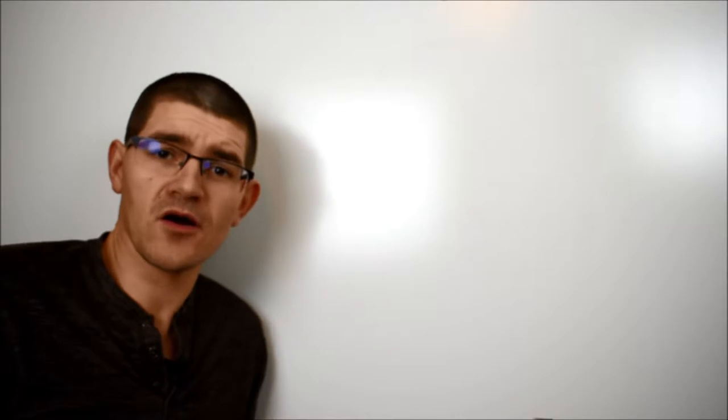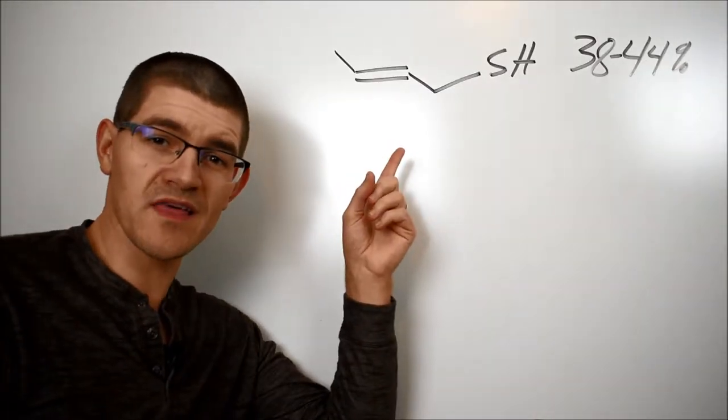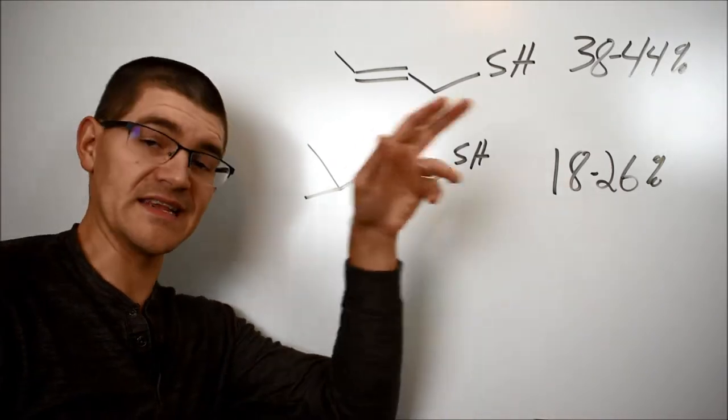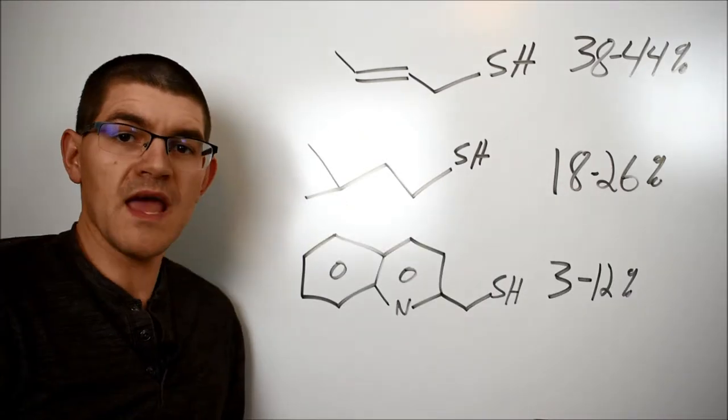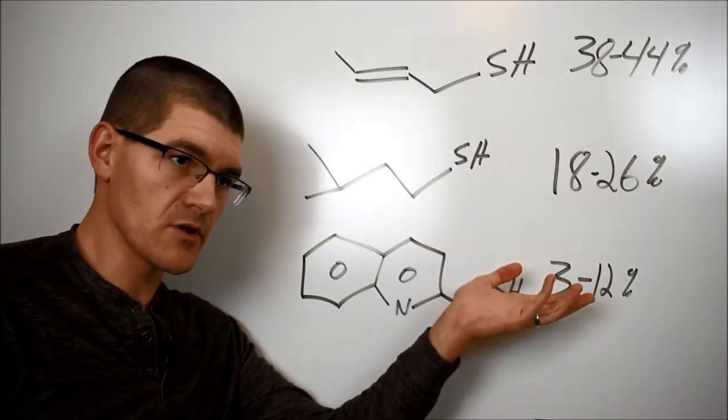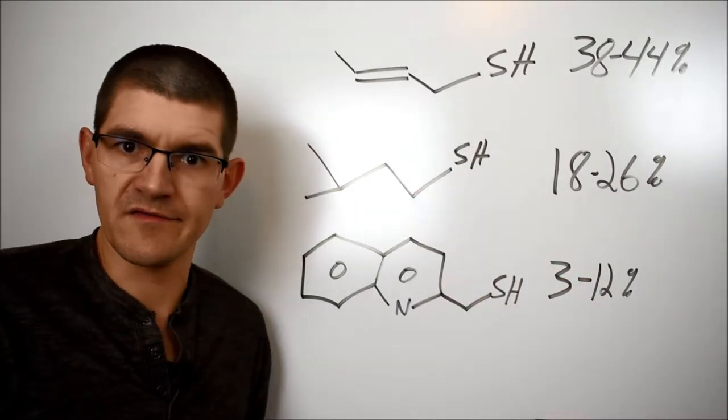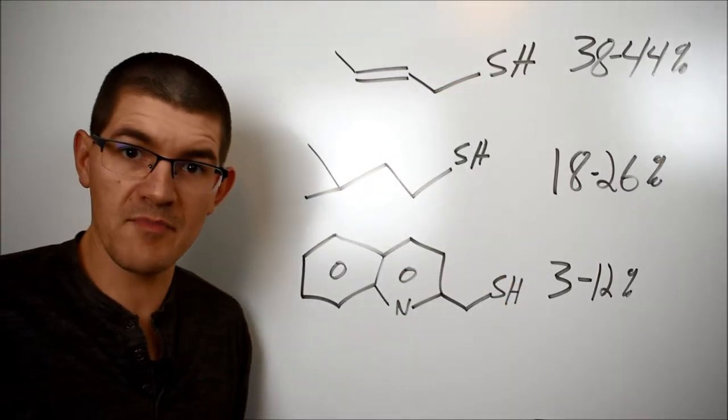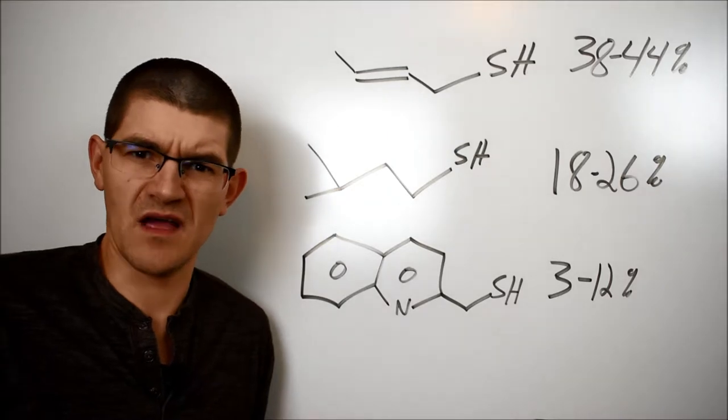They have anal glands that shoot out the really nasty stuff, and it's made mostly of thiols. The big three are E-butene thiol, 38-44%, 3-methylbutane-1-thiol, 18-26%, and 2-quinoline-methane-thiol, 3-12%. I know it doesn't equal 100%, we'll talk about that other stuff in a second. I just want to show that these are all three, in fact, thiol compounds, and they give that rotten chupacabra smell to the skunk.